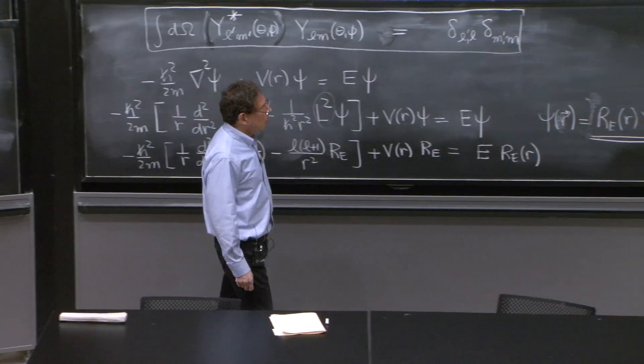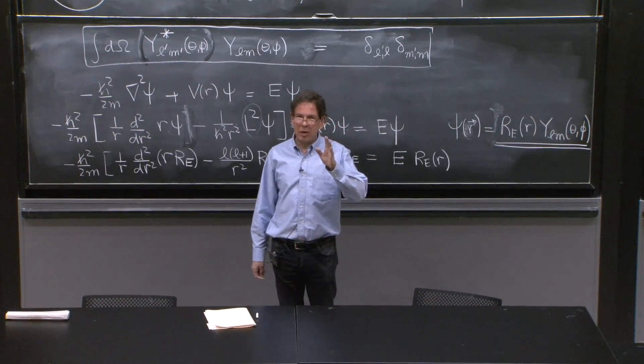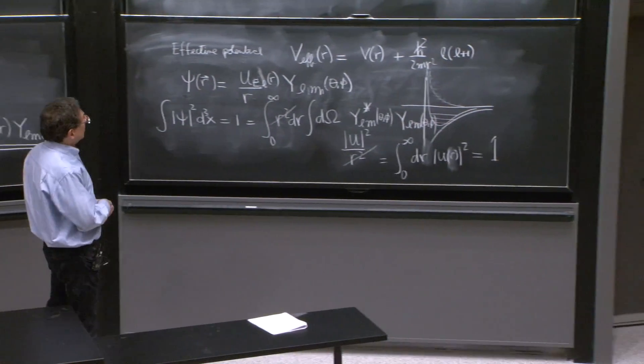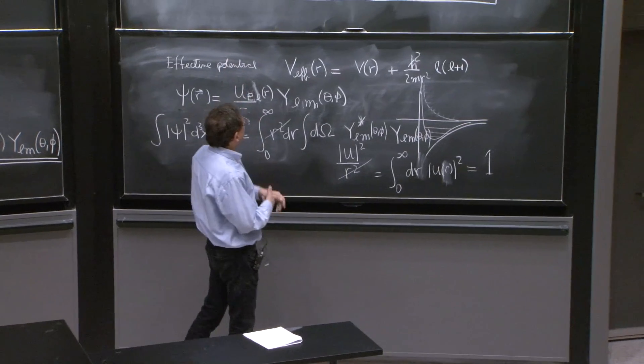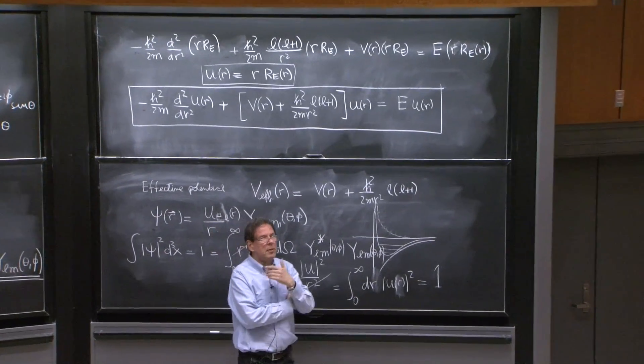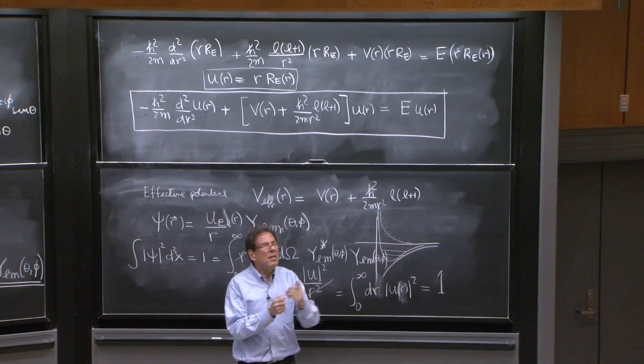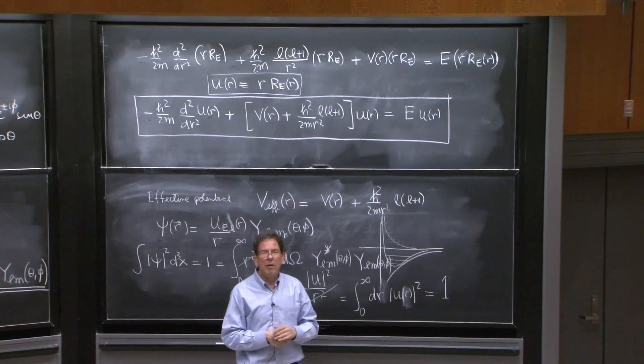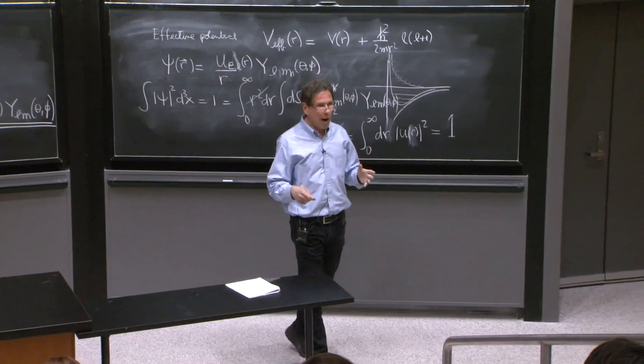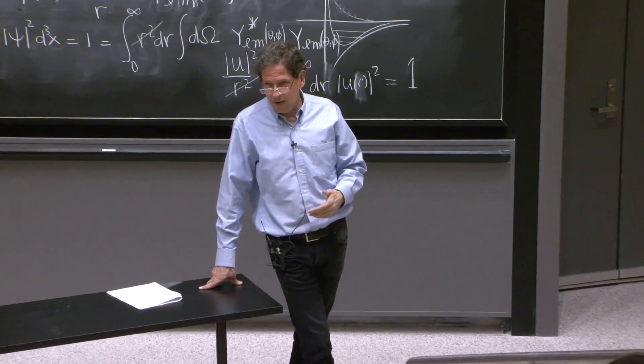OK. The way we think about it is not completely general, but it's good enough. We think of the differential equation as we have here, and imagine a potential that when r goes to 0, the centrifugal barrier dominates.